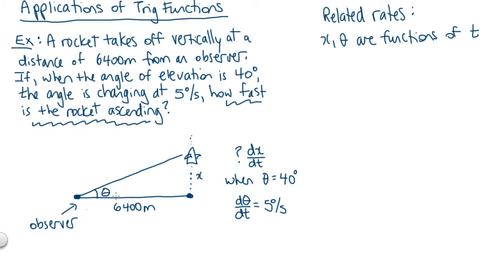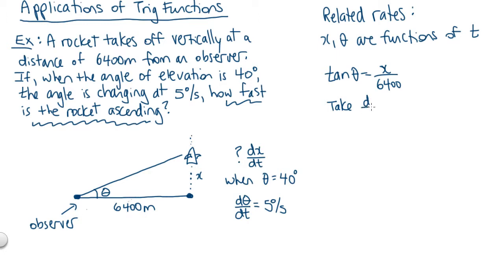First thing we need to get started with the calculation is some type of equation that relates our two variables — some relationship between x and theta. If we think about the angle theta, a good way to incorporate x and the 6,400 would be to talk about the opposite and the adjacent side. So we can say tan(theta) equals opposite over adjacent, which is x over 6,400. That way we've got theta, x, and 6,400 all incorporated into this single equation. Now because our variables x and theta are functions of time, we want to take derivatives of both sides with respect to t.